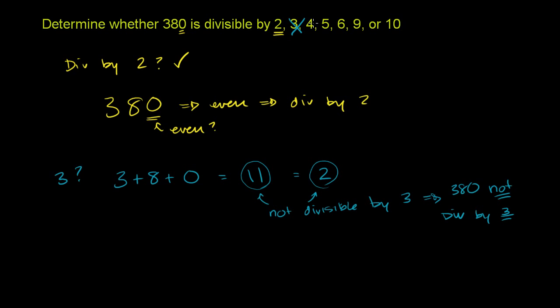Now let's think about the situation for 4. So we're thinking about 4 divisibility. Now, something you may or may not already realize is that 100 is divisible by 4. It goes evenly. So this is 380. So the 300 is divisible by 4, so we just have to figure out whether the leftover, whether the 80 is divisible by 4.